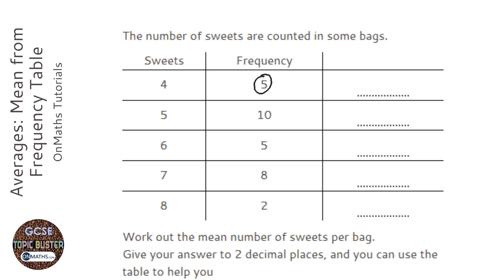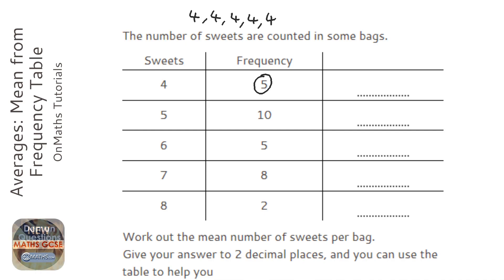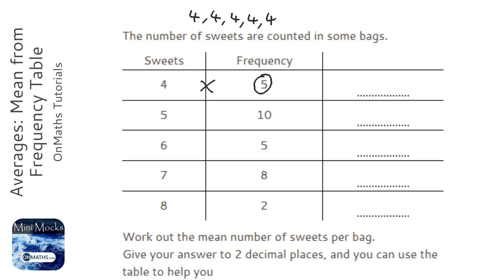Now this five here means that there are five fours, so a different way of writing this is just four, four, four, four, four — there are five fours. Now we could type into our calculator four plus four plus four plus four plus four, or what we can do is just four times five, and that will equally give us the total of those fours.